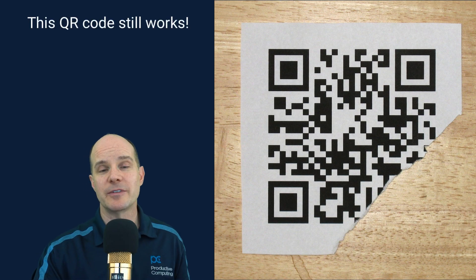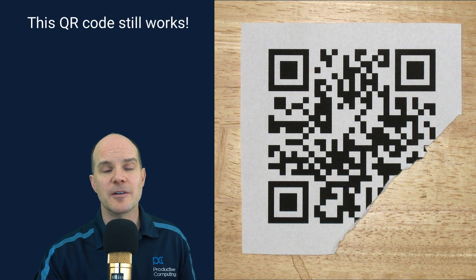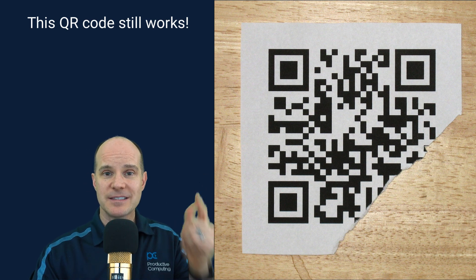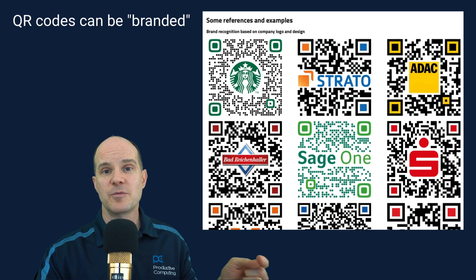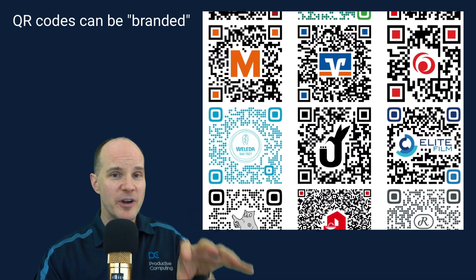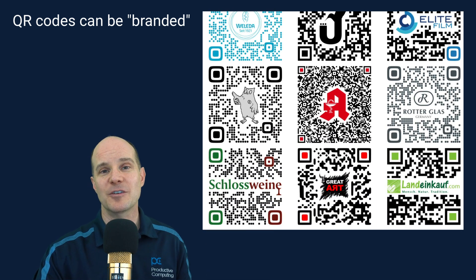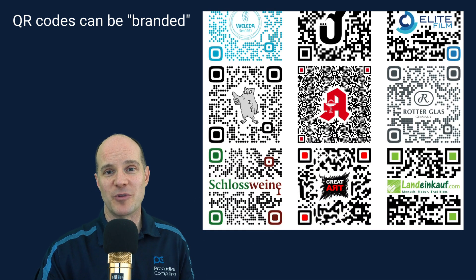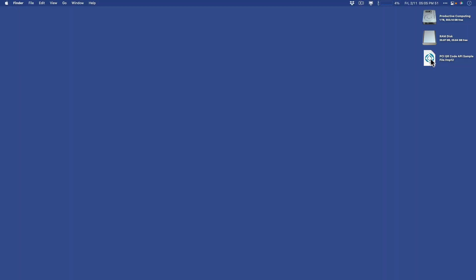Here's an example of a damaged QR code that still works with a reader. Based on that same concept, you can actually brand your QR codes by putting your own logos or pictures on them. Depending on where you put the picture, you can construct it in a way that you can actually brand the QR code, which a lot of companies are actually doing today as well. Now, let's create some QR codes in FileMaker.